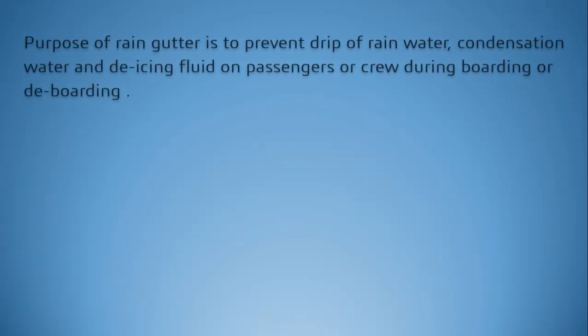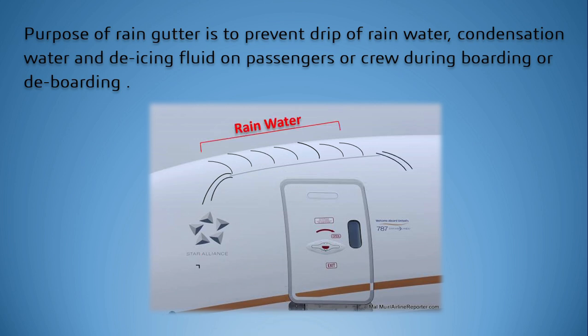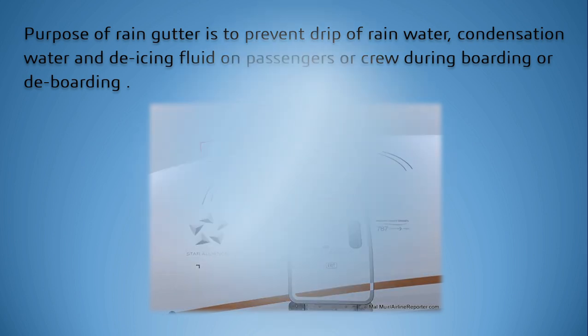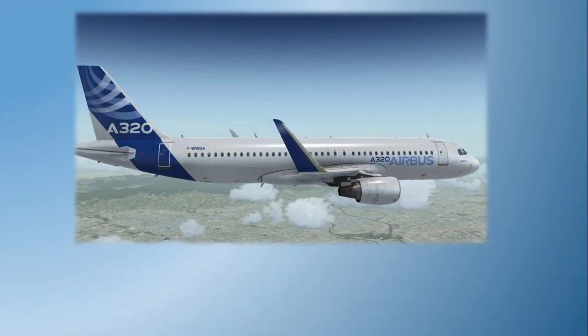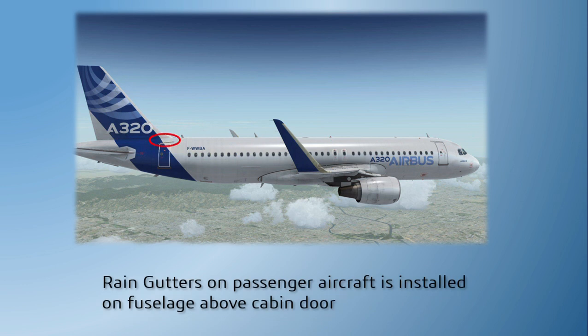The purpose of the rain gutter is to prevent drips of rainwater, condensation water, and de-icing fluid on passengers or crew during boarding or de-boarding. It also keeps water out of the aircraft interior where the floor can become slippery. Rain gutters on passenger aircraft are installed under a fuselage section above the cabin door.